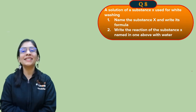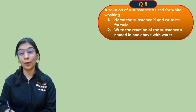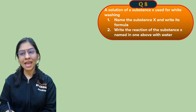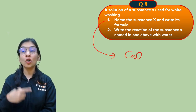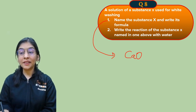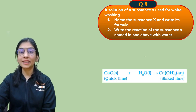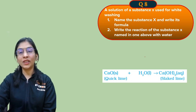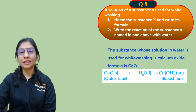Question nine: a solution of substance X is used for white washing — name the substance X and write its formula. The substance used for white washing is calcium oxide (CaO). When calcium oxide is put with water, we get slaked lime — calcium hydroxide aqueous solution Ca(OH)₂.